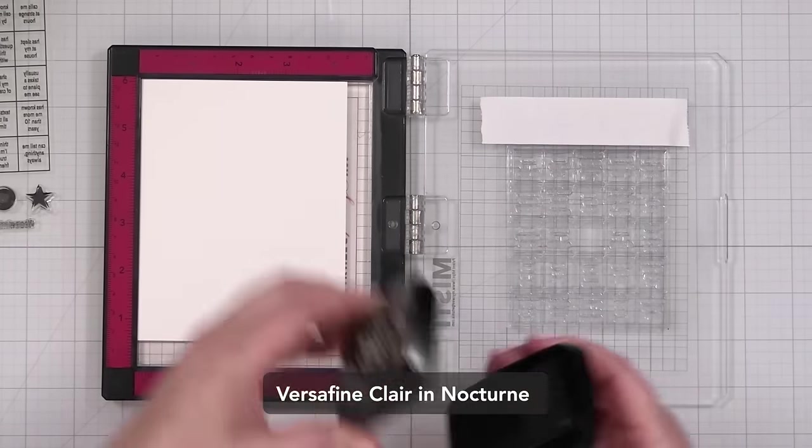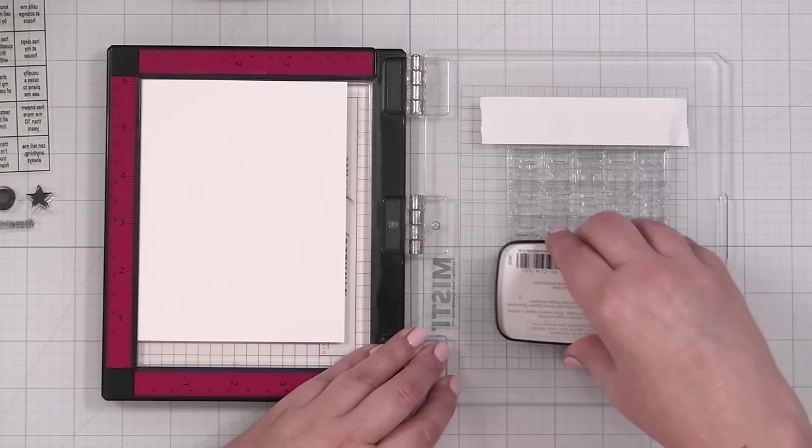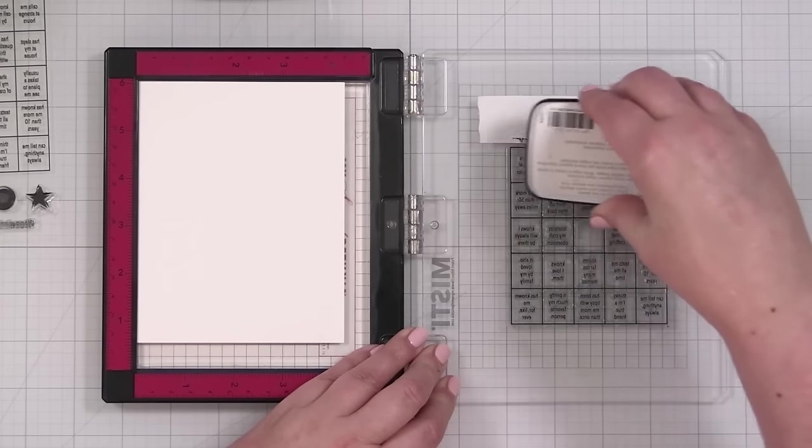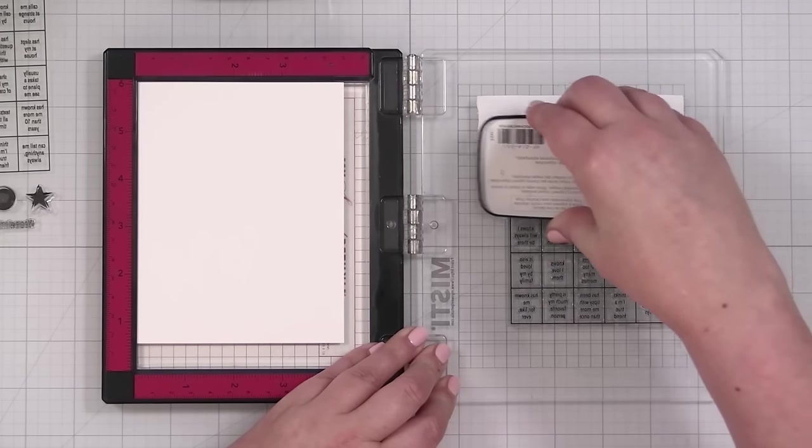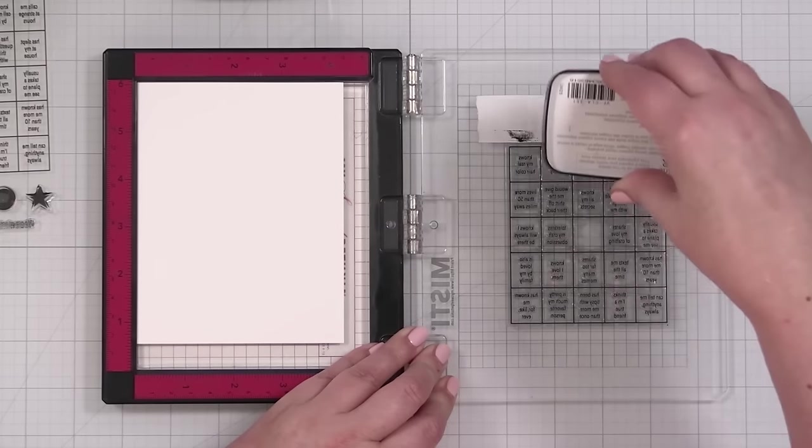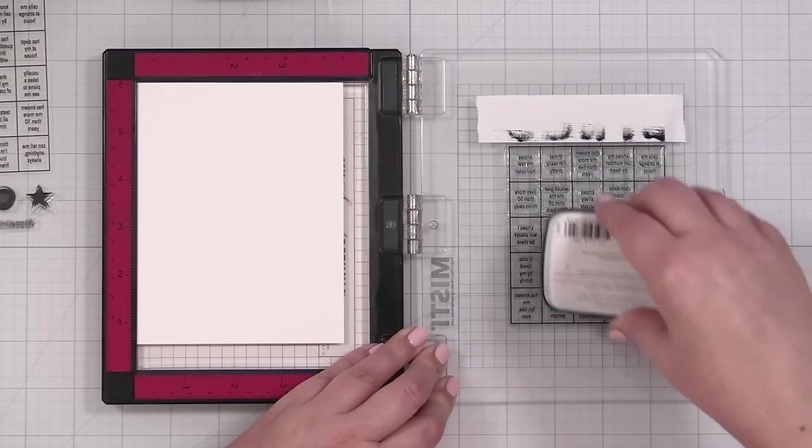So we're going to use the VersaFine Clair Nocturne. This is such a good, such a good crisp ink, but it is pigment, which means it's oil-based. And that means you have to let it dry before you go anywhere near this area with embossing powder, which is what I'm planning for the top.